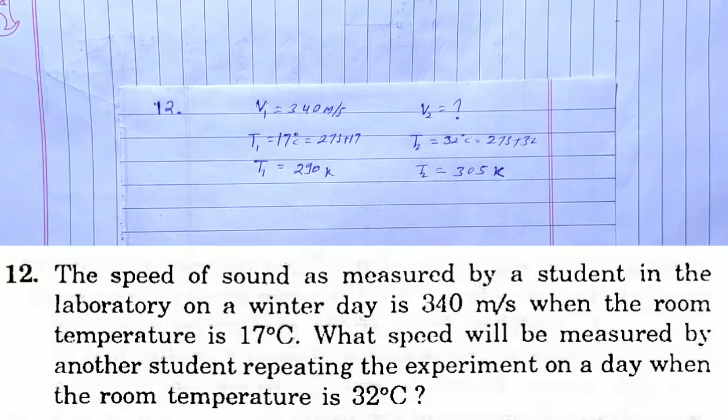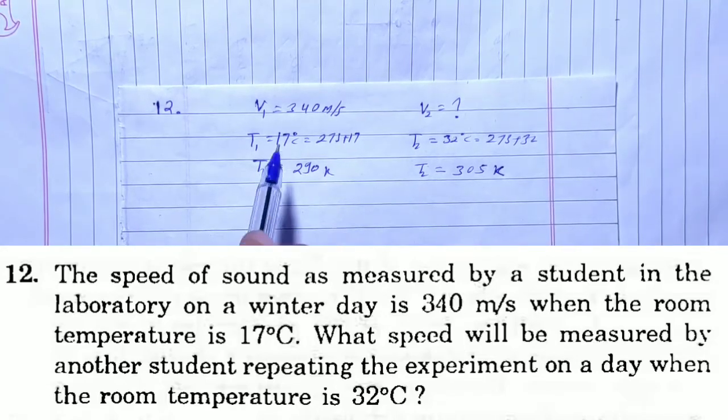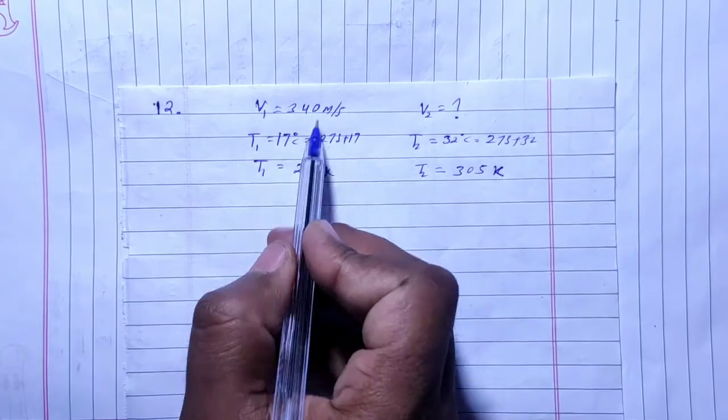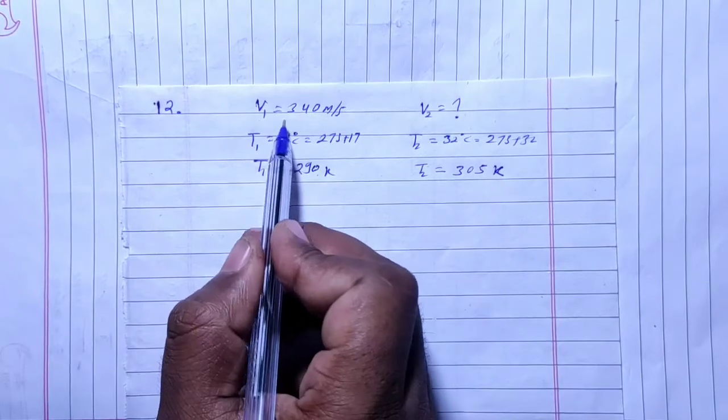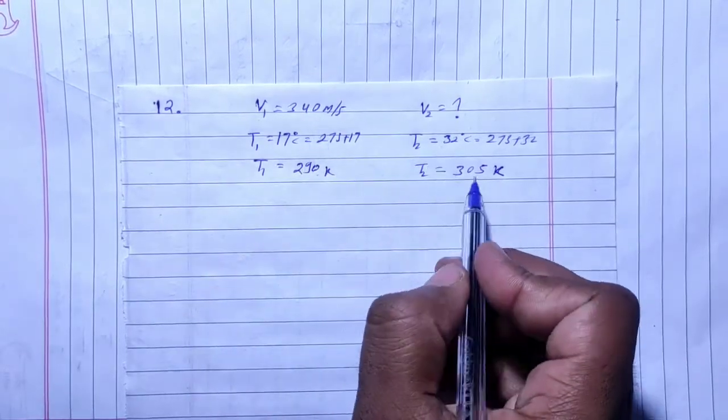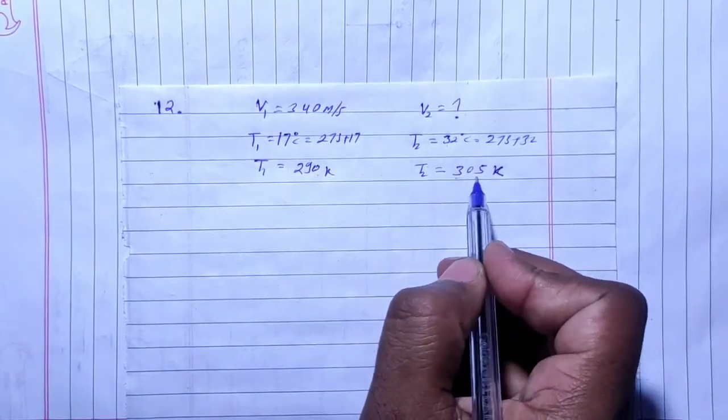What speed will be measured by another student repeating the experiment on the day when the room temperature is 32 degree celsius? So speed is 340 when the temperature is 17 degree celsius, and if the temperature is 32 then speed is unknown.